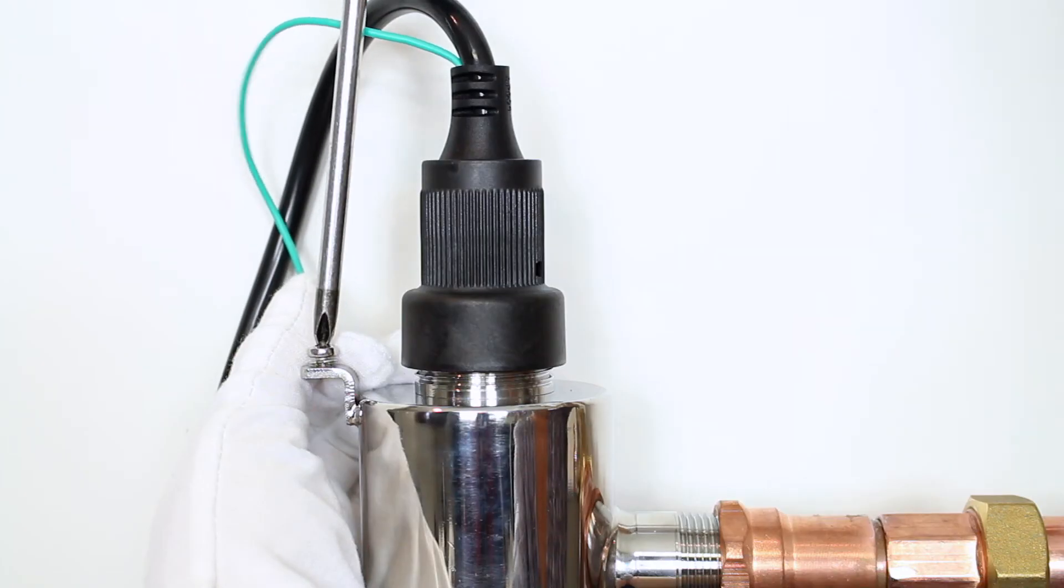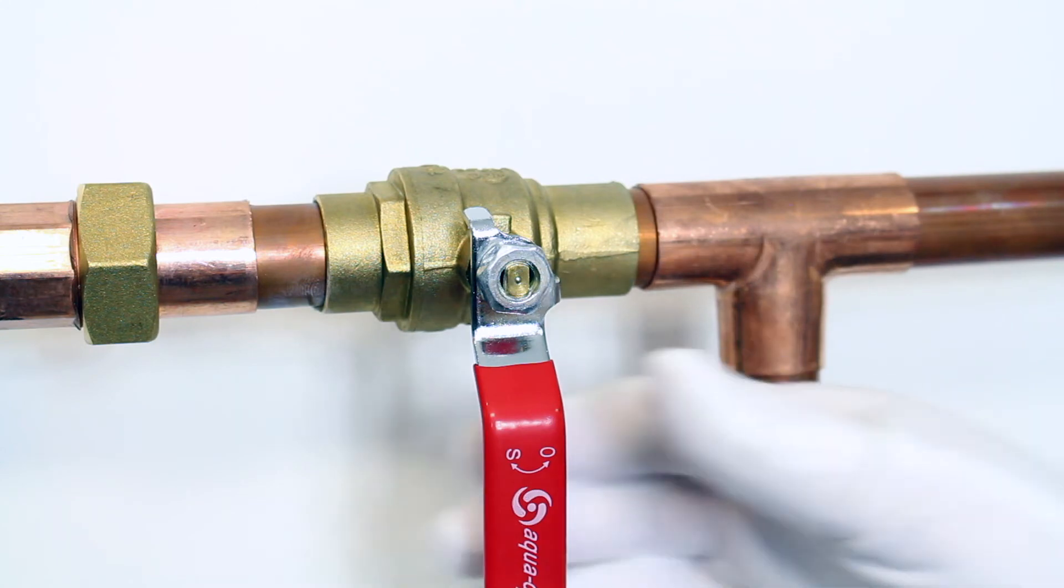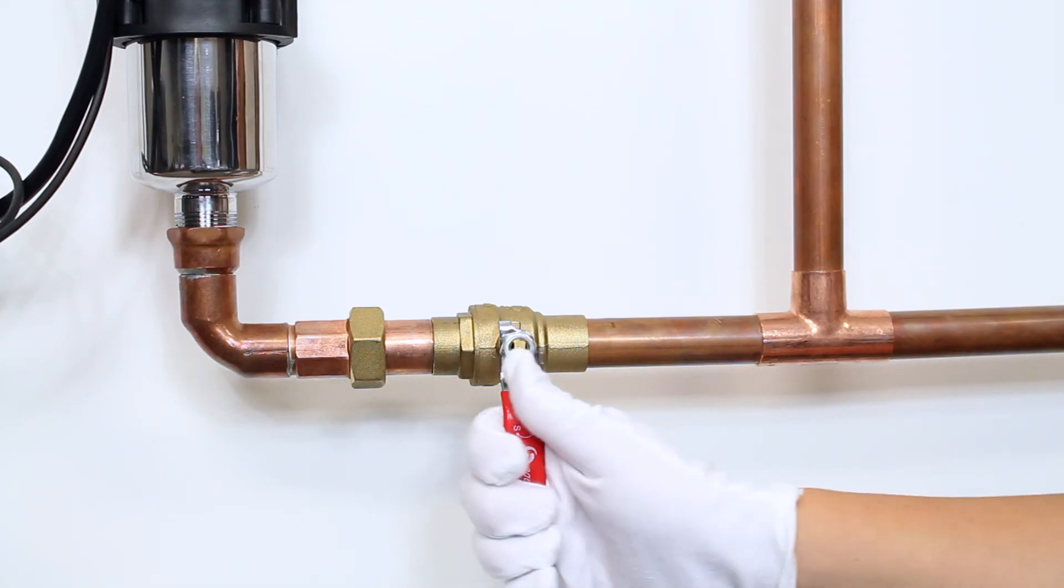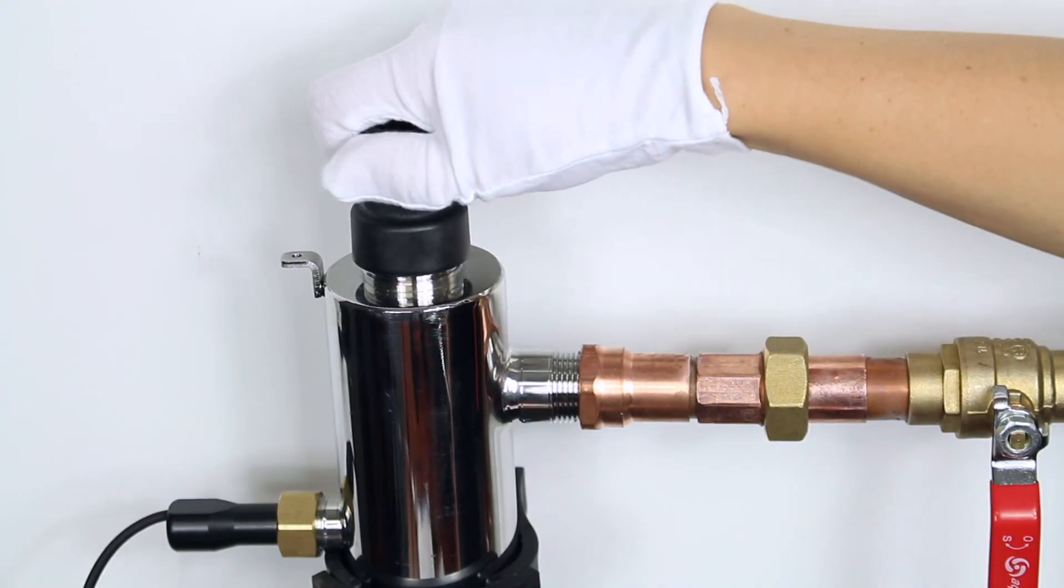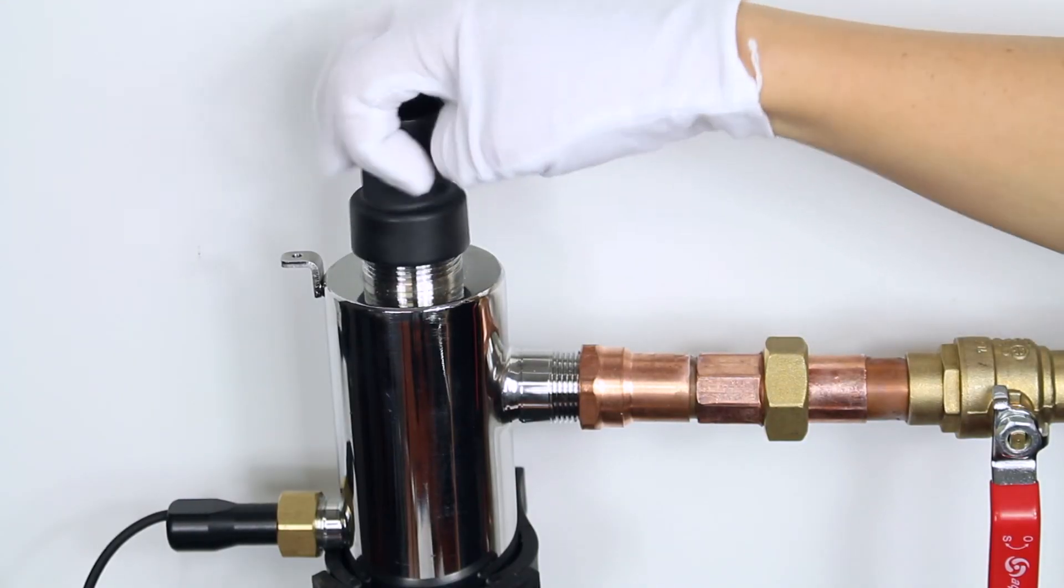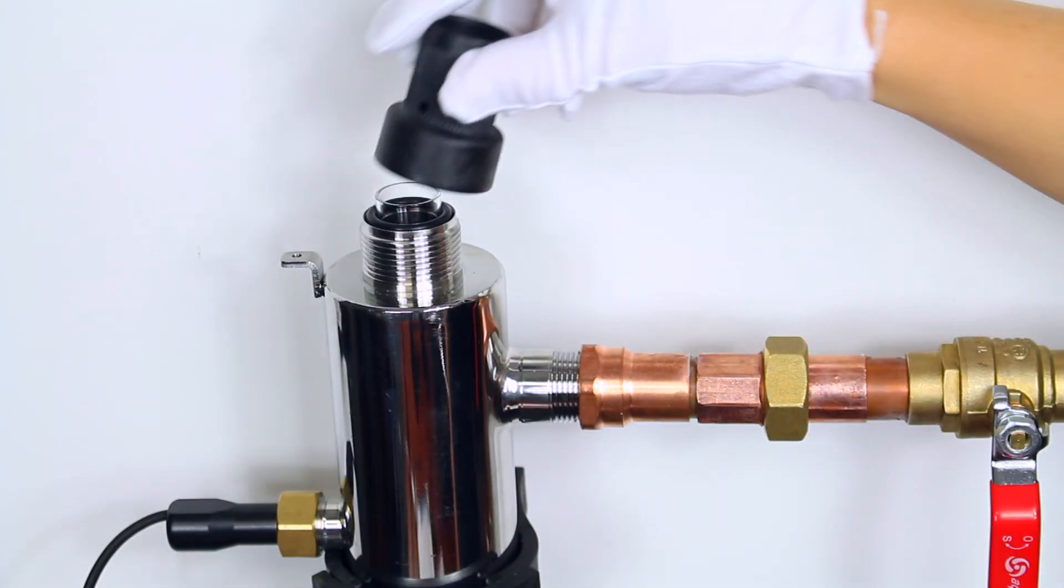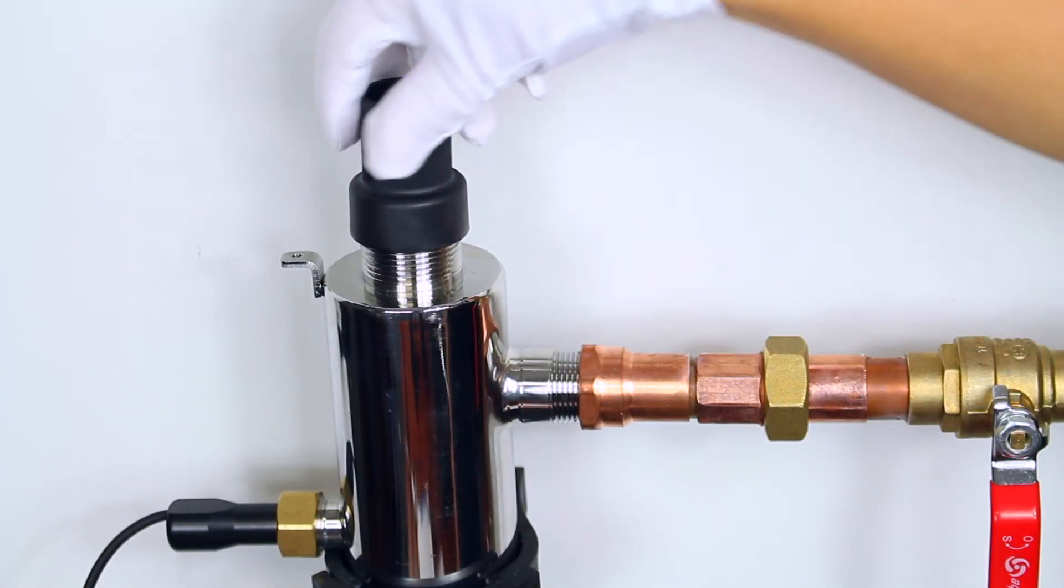Tighten the ground screw back on the ground lug on the UV reactor. Slowly turn the water back on to ensure that there is no leaking from the gland nut. If there is, turn the water off again and take off the gland nut. Make sure that the o-ring is fully seated up against the reactor and try again.